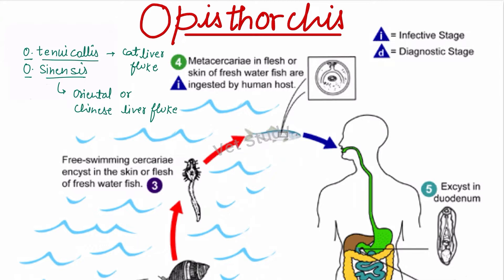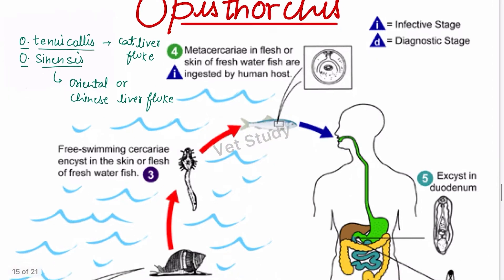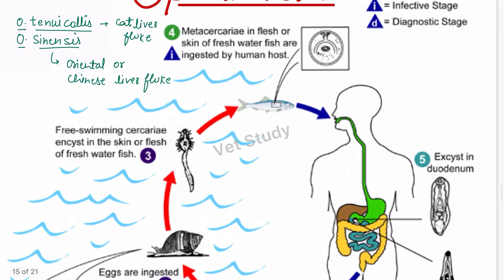If we talk about the morphology, testes are lobed, ovaries are anterior to testes. The most specific and most asked question from the morphology of this parasite is the excretory bladder — remember, the excretory bladder of Opisthorchus is Y-shaped. This is important for your exam. Additionally, the cirrus sac is absent.